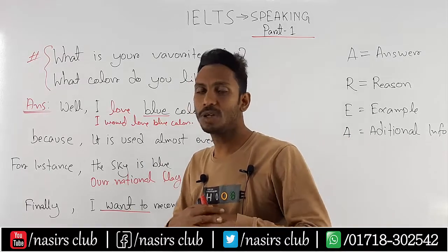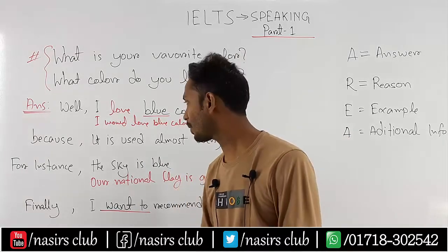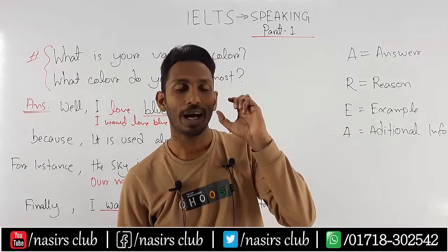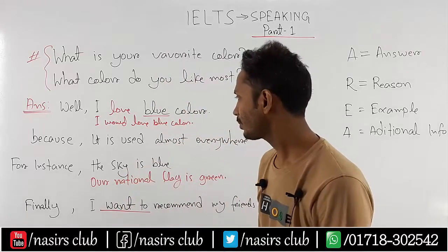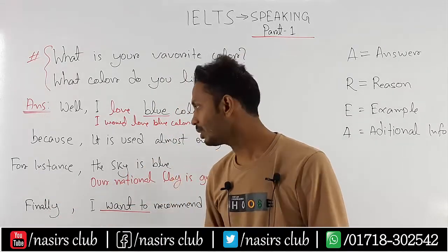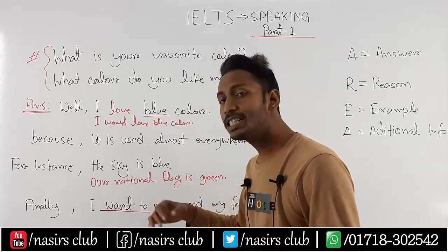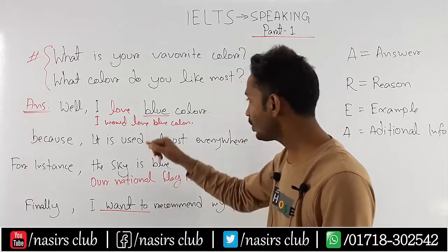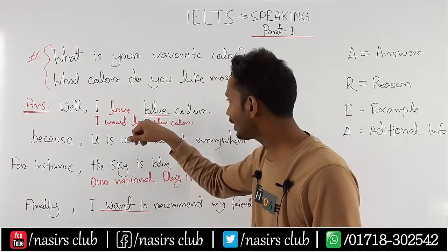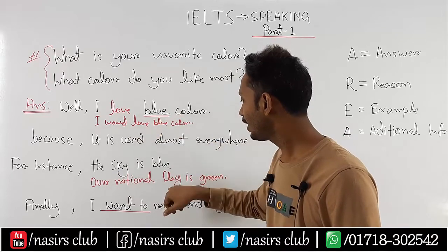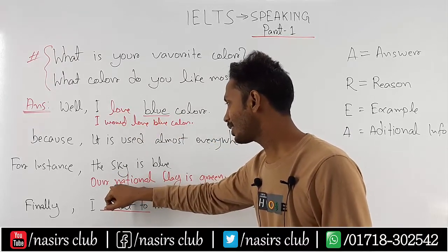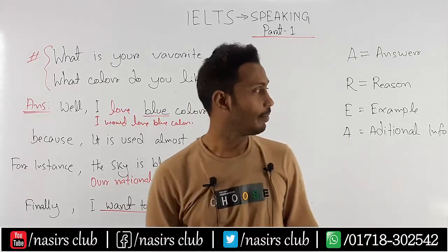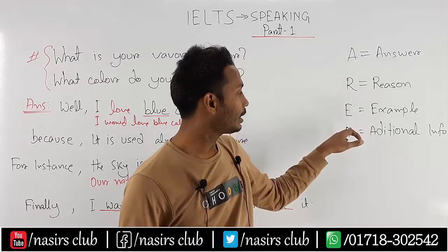Because it is used almost everywhere. Now the E in AREA — the Example. For instance, the sky is blue. For instance, our national flag is green. So you could also say: I will choose green color. Our national flag is green — this is the example part.